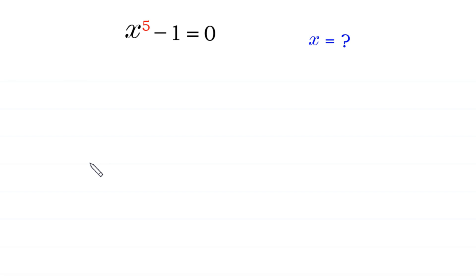Hello, welcome to how to solve this very nice equation. x to the power 5 minus 1 is equal to 0. We need to find all possible values of x.